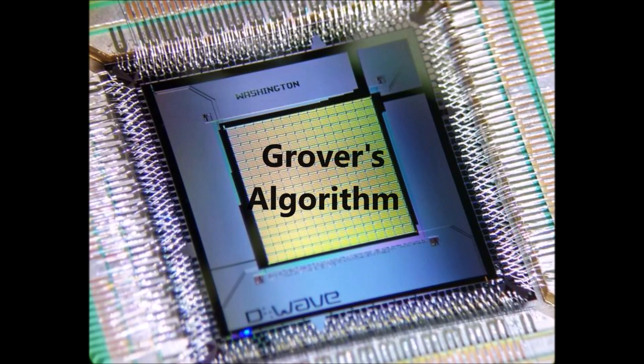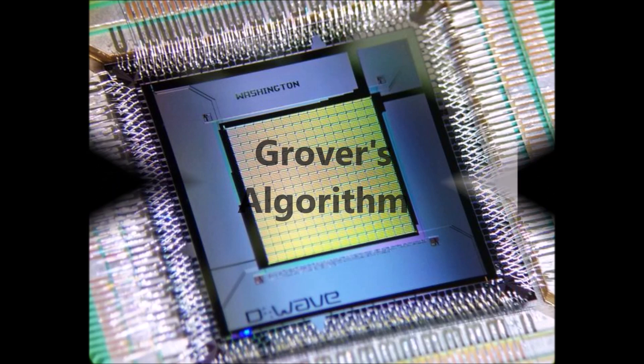Quantum computers claim to be faster than classical computers, but have quantum computers actually been proven to have a speedup over classical ones? It wasn't clear until 1994, when Shor created Shor's algorithm, which had a significant speedup over classical computers.